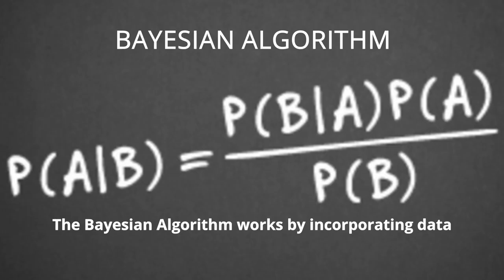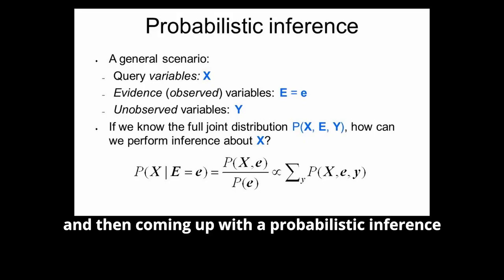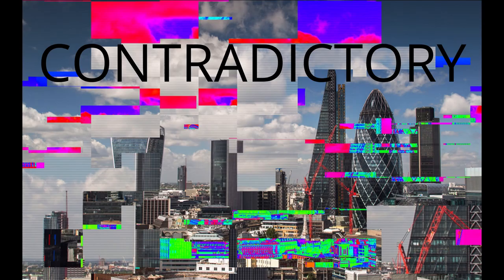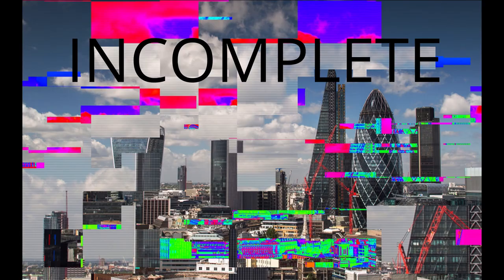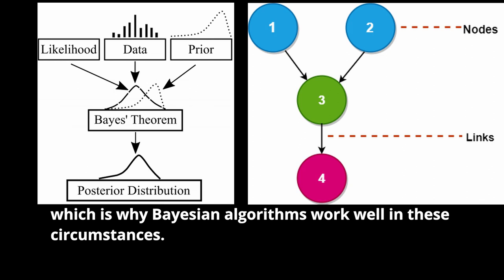Bayesian algorithms work by incorporating data and then coming up with a probabilistic inference. This method works well even though sometimes the data might be contradictory, noisy and incomplete. Learning is a form of uncertain inference, which is why Bayesian algorithms work well in these circumstances.